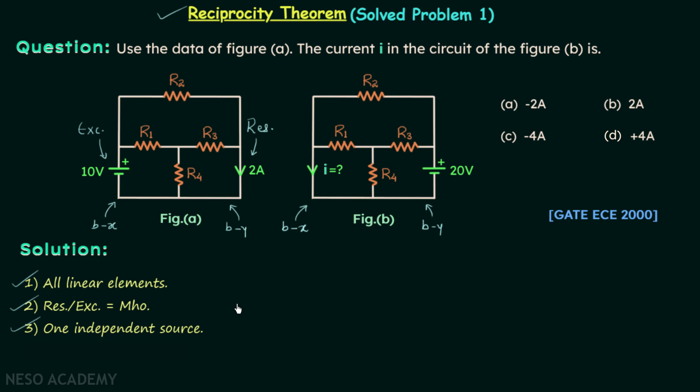Now moving on to the final condition. The network should not have any dependent source and yes it is not having any dependent source. So all the conditions are satisfied by this network and therefore we can use reciprocity theorem.